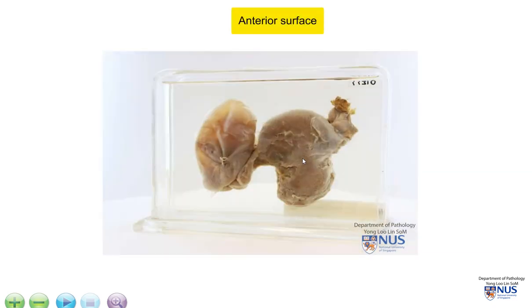This is the anterior surface of the uterus and again we have a very markedly dilated right tube and this is the left fallopian tube.